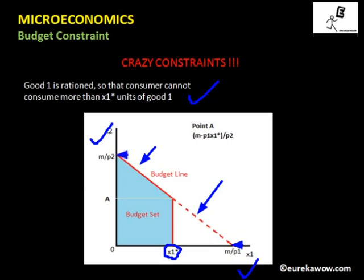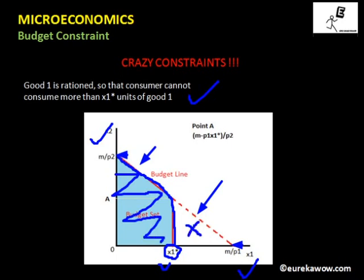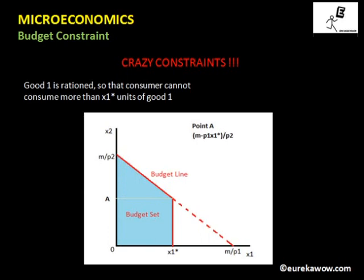Since good one is rationed, the consumer cannot buy more than x1 star units. As a result, the budget line remains the same up to x1 star units, but after that the budget line becomes vertical since the consumer cannot buy more units of good one. This vertical segment represents the budget set, with the portion beyond x1 star excluded.